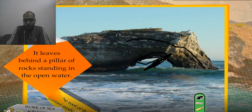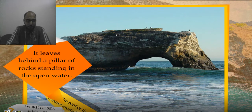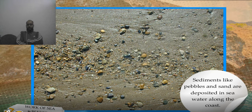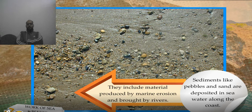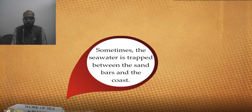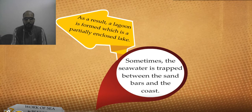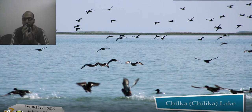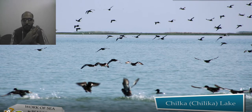That is called a sea arc. These pillars are termed as stacks. Sand bars are formed when broken rock materials are deposited on the seafloor near the coast. Sediments like pebbles and sand are deposited in sea water along the coast, including material produced by marine erosion and brought by rivers. A beach is formed in due course of time from all these deposits. Sometimes sea water is trapped between sand bars and the coast — as a result, a lagoon is formed, which is a partially enclosed lake.